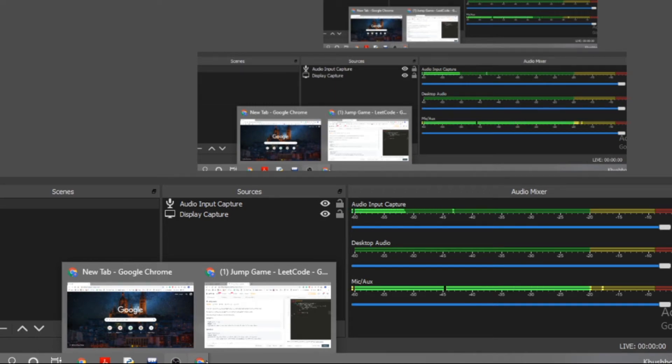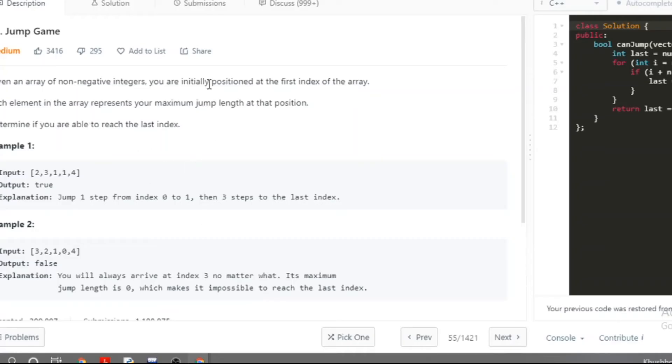Hey folks, this is LeetCode question number 55, the Jump Game. Let's read it. Given an array of non-negative integers, you are initially positioned at first index of the array. Each element in the array represents your maximum jump length at that position.